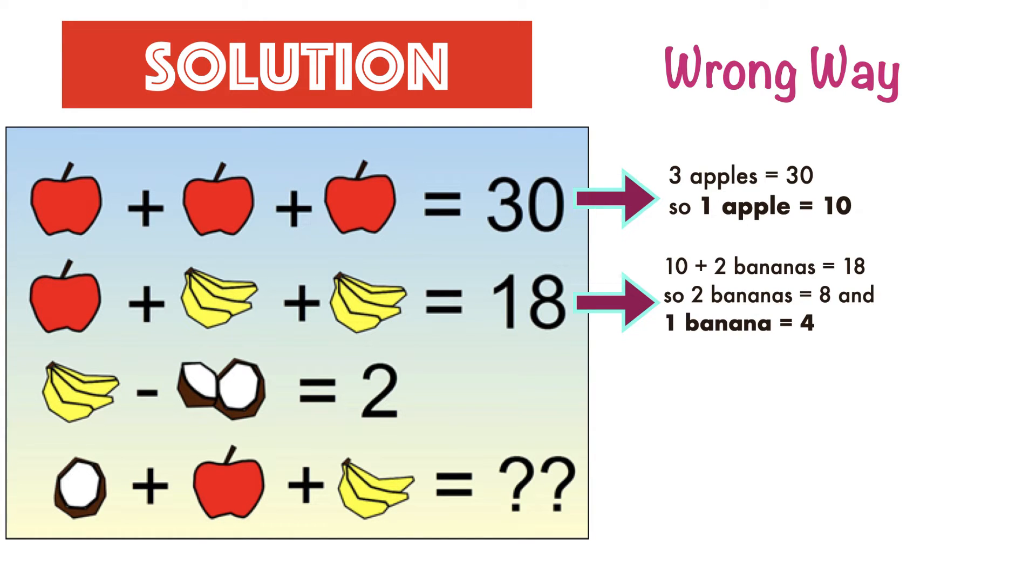In the third equation, 4 minus 1 coconut equals 2, so 1 coconut equals 2. Therefore, the final answer after substituting the values is 1 coconut plus 1 apple plus 1 banana, which equals 2 plus 10 plus 4 equals 16.